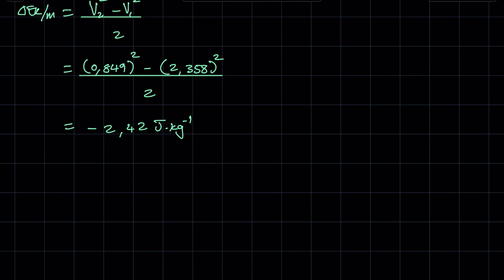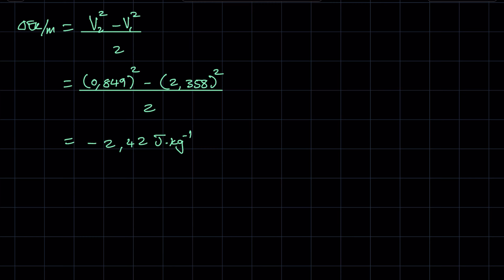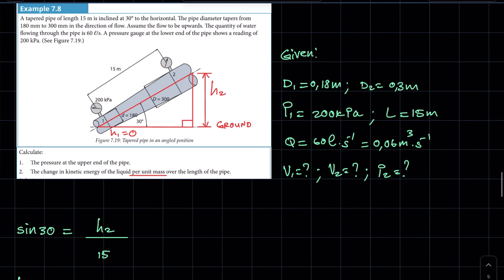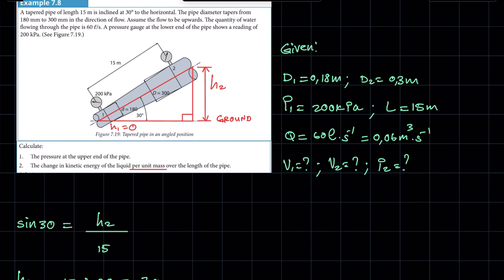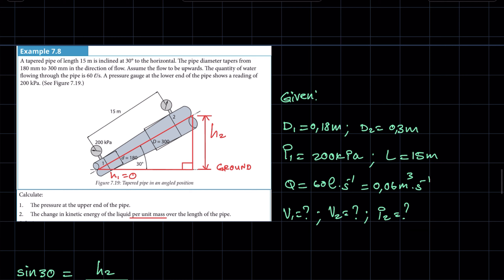Kinetic energy is a scalar quantity so it doesn't have direction, but the negative here indicates that we are losing kinetic energy as the water flows. The negative essentially tells us that as the water flows from the lower end to the upper end it is decelerating, meaning it is losing kinetic energy. I hope you find this video helpful — if you have any questions, post them in the comment section.